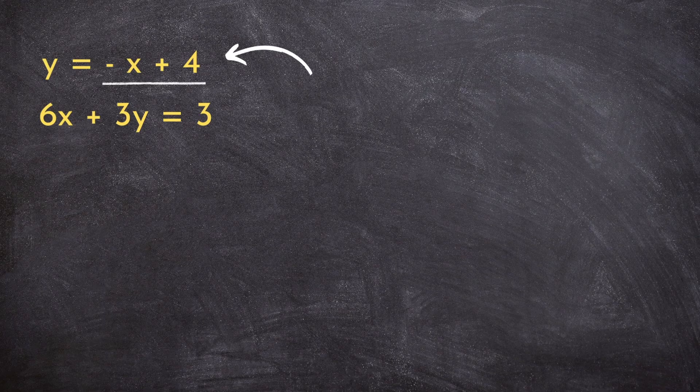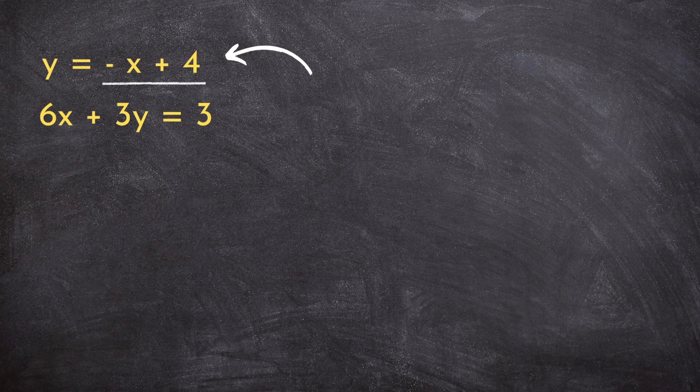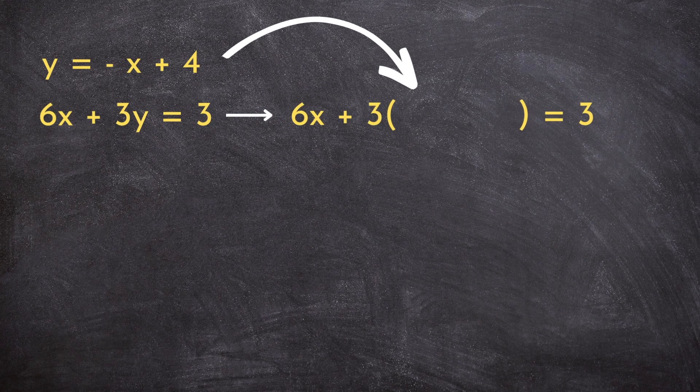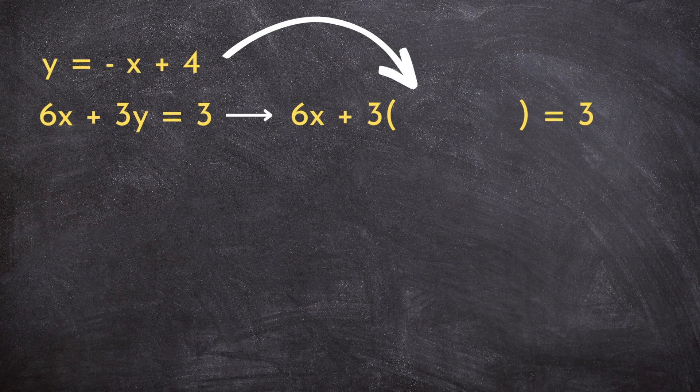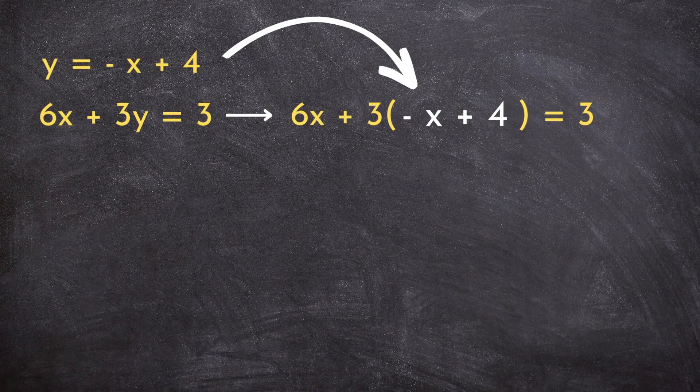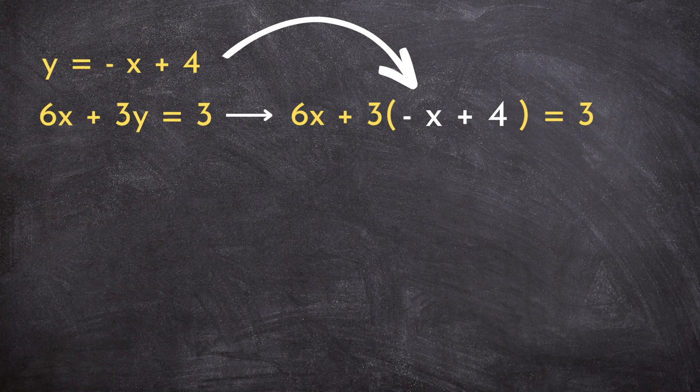Since we know y equals negative x plus 4, we're going to take negative x plus 4 and substitute it into the other equation wherever we see a y. Brackets are going to be key here so that our signs and operations don't start getting mixed up.